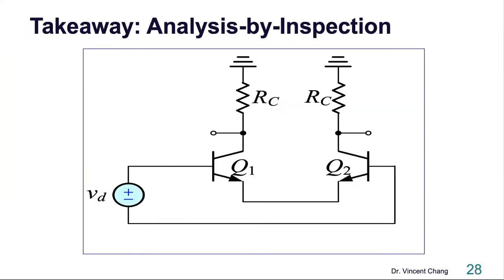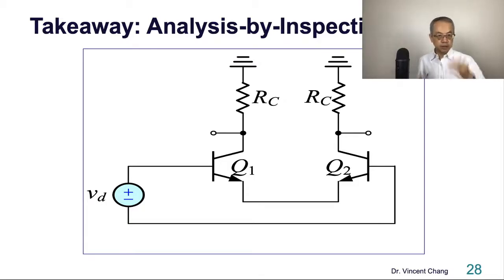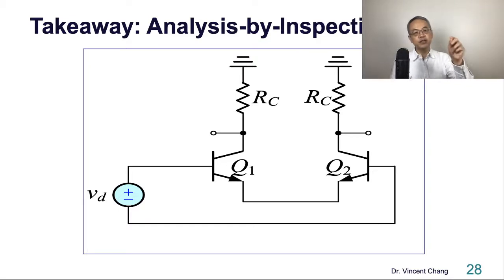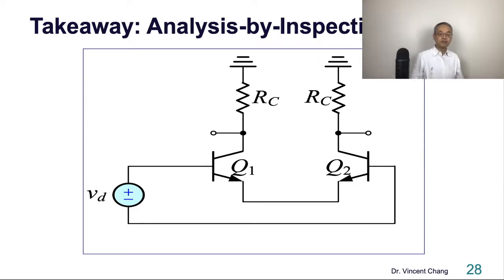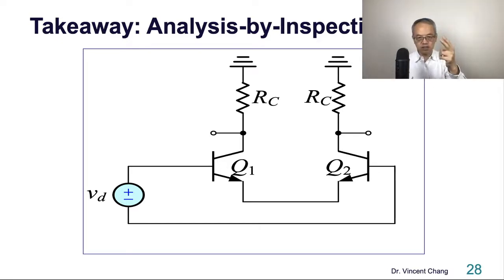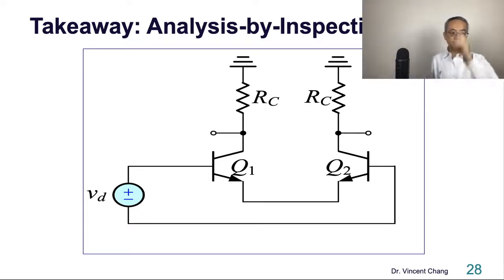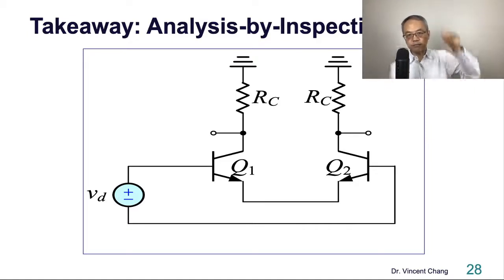Here's the takeaway — three steps, very simple. Put these down on your notes. These three steps will help you overcome the fear when you face the differential amplifier next time. The first step: total resistance looking into the emitter — so total emitter resistance, 2RE. Remember: emitter perspective, total emitter resistance. The key word is emitter.